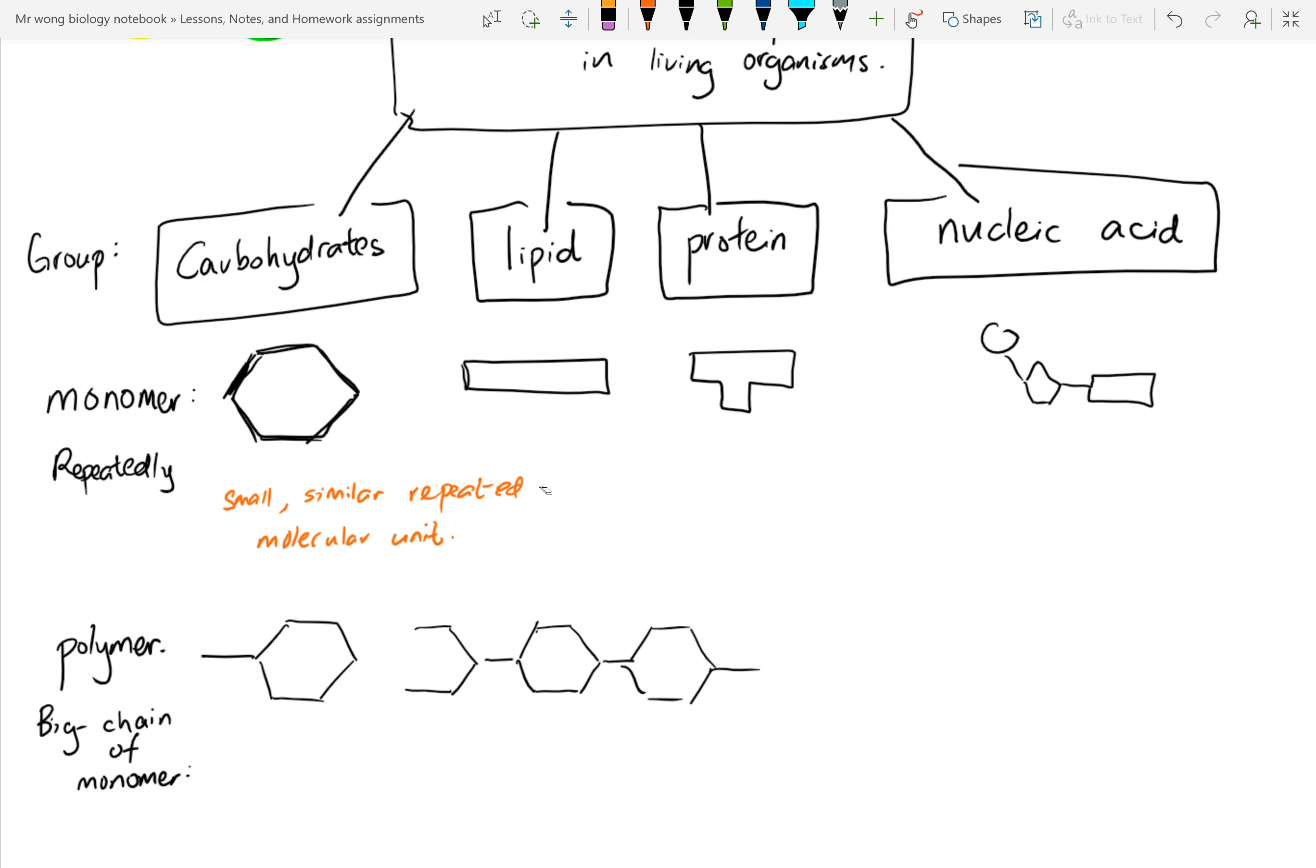The attachment of this is still covalent bond. So all of these are still covalent bonds. But the formation of this covalent bond needs to remove a water. So whenever a new covalent bond is formed between these two monomers, a water molecule will be released. This particular process, we call it dehydration synthesis.